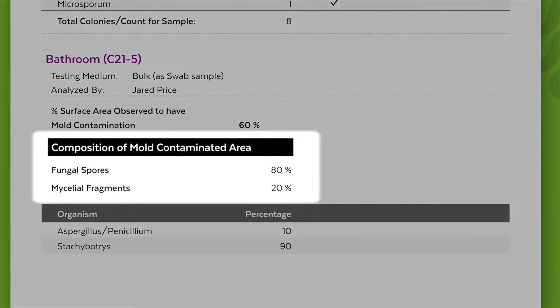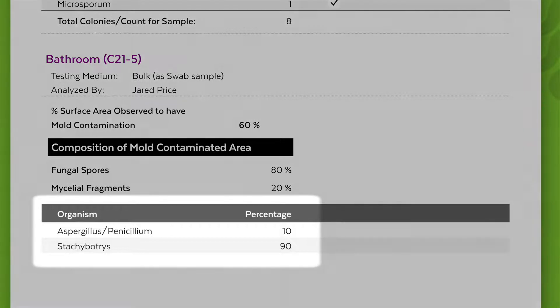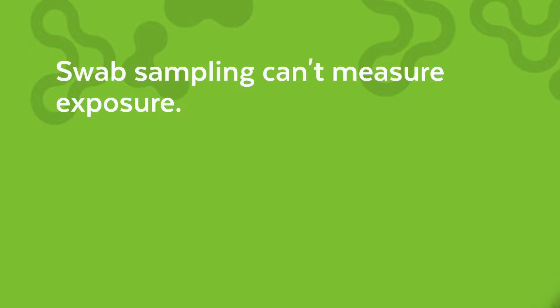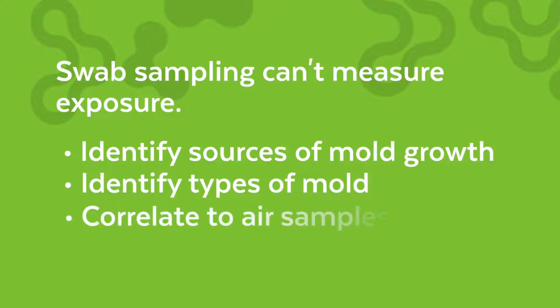The composition of mold contaminated area begins with an estimated breakdown of spores and mycelia fragments with the most useful information being the organism and percentage out of a hundred percent of the mold observed. Any amount of alternaria, catomium or stachybotrys can potentially affect someone's health. However, swab sampling alone is not able to measure exposure but is meant to identify sources of mold growth and the types of mold and often correlate to air samples taken at the same time.